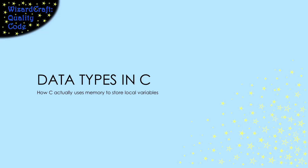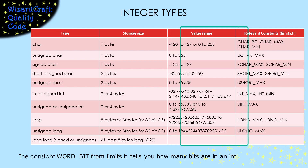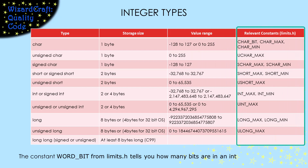Just a quick video giving an overview of the data types that C uses, with links to other videos that give more details about some of those types. This chart summarizes the integer types that C has, showing the range of values each can hold, and constants from the limits.h include file that you can use with them.